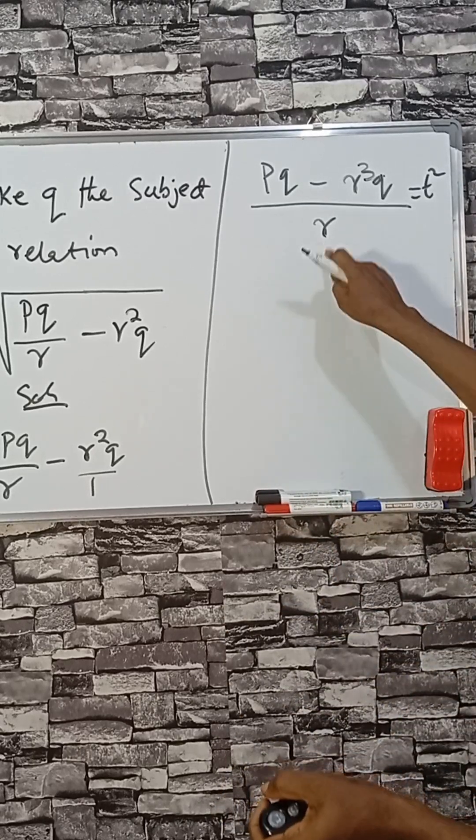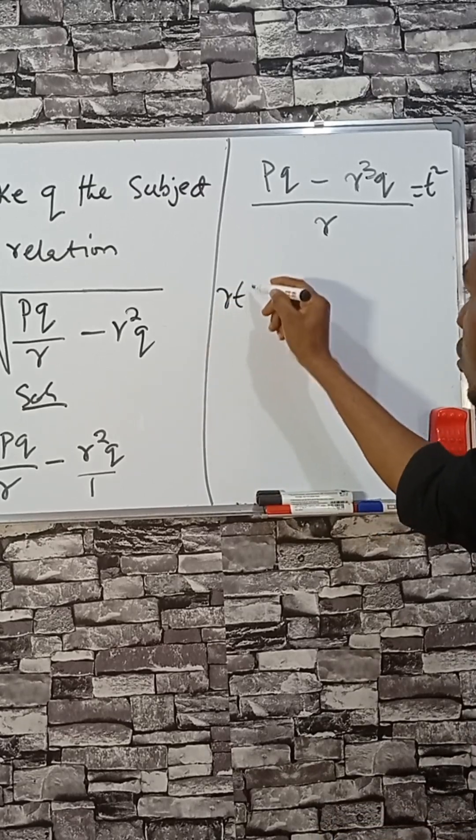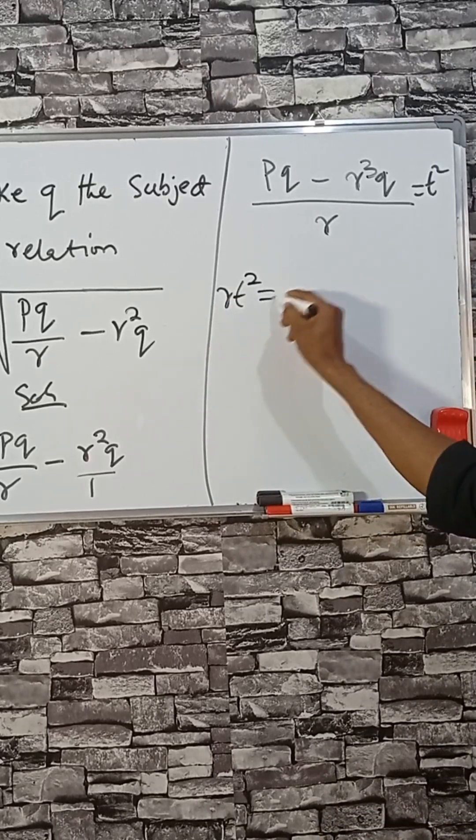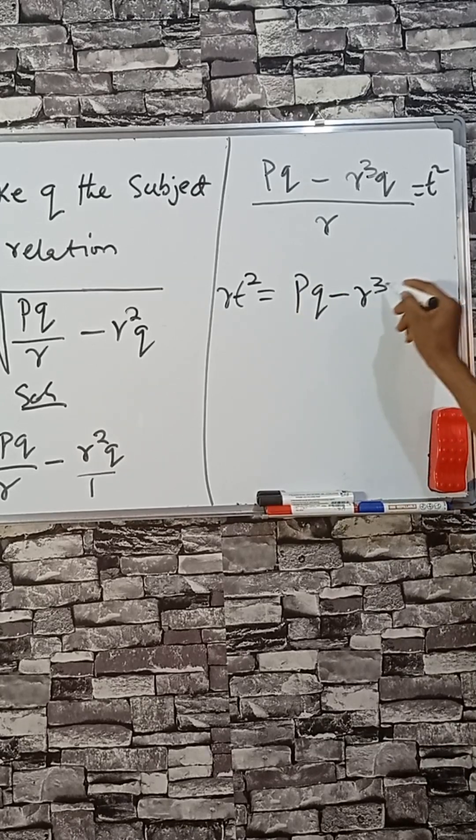so that this, we multiply this, that will be r, r, c squared equals to pq minus r cube